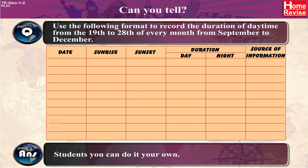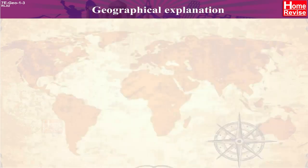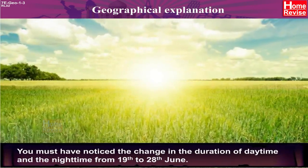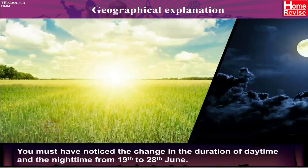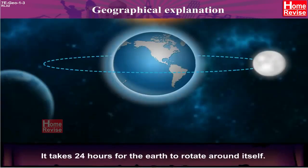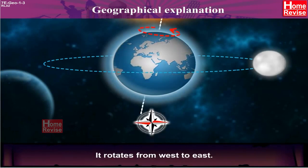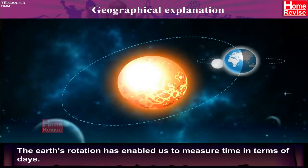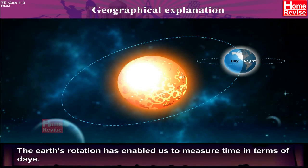Geographical explanation: You must have noticed the change in the duration of daytime and nighttime from 19th to 28th June. It takes 24 hours for the earth to rotate around itself. It rotates from west to east. The earth's rotation has enabled us to measure time in terms of days.